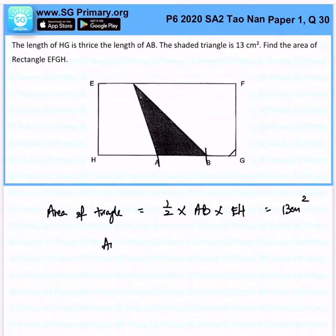So we know that AB times EH is going to be 13 times 2, which is 26cm². Now let's look at the rectangle.